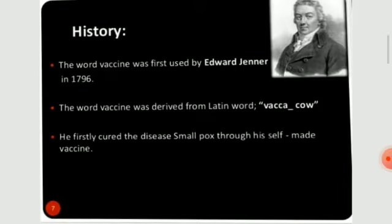This is the historical background of vaccine and vaccination. The word vaccine was first used by Edward Jenner in 1796. The word vaccine was derived from the Latin word 'vacca,' and he firstly cured the disease smallpox through his self-made vaccines.